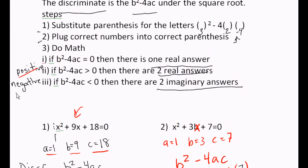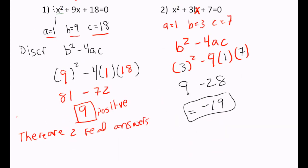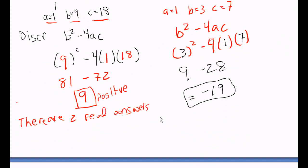If our discriminant is negative, then there are two imaginary answers. So we just write this down. There are two imaginary answers. You could say there are two imaginary solutions. A solution is just another word for an answer. Let's try one more.